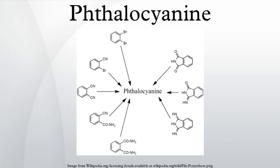Unsubstituted phthalocyanines strongly absorb light between 600 and 700 nanometers; thus these materials are blue or green. Substitution can shift the absorption towards longer wavelengths, changing the color from pure blue to green to colorless. Phthalocyanines are structurally related to other macrocyclic pigments, especially the porphyrins.